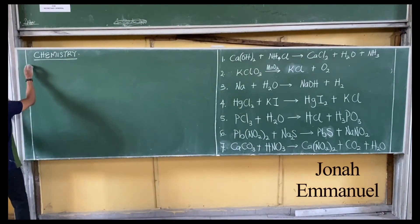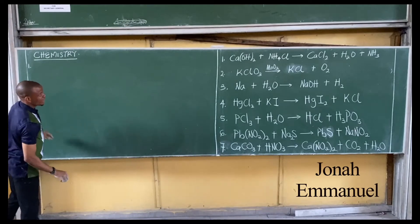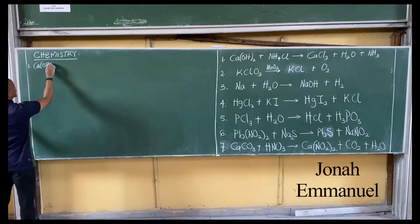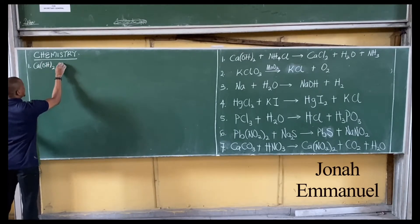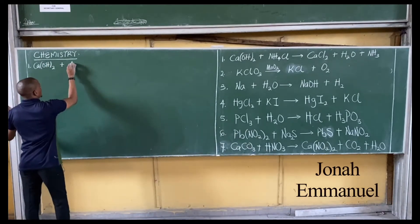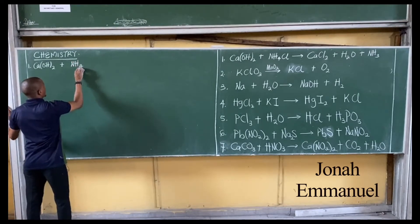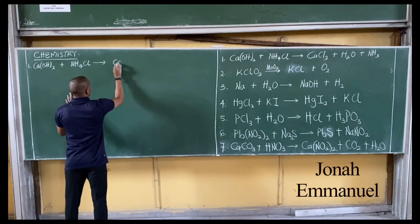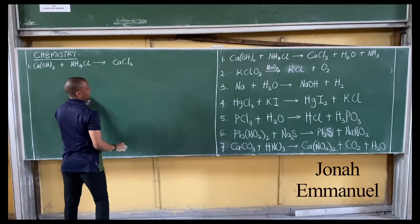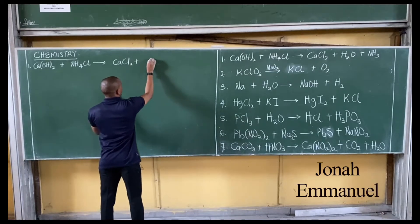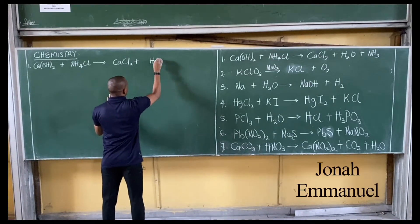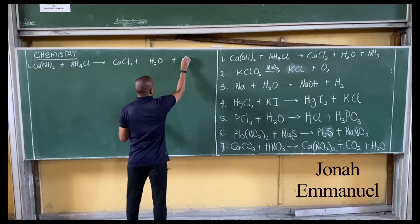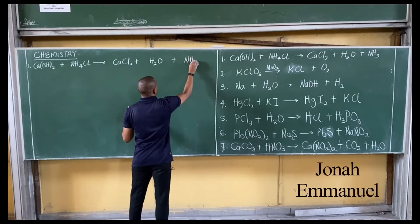Number one, I'm having the first one here. Calcium hydroxide, Ca(OH)2, combining with ammonium fluoride, NH4F, to give calcium fluoride plus H2O. We have water, and finally ammonia.